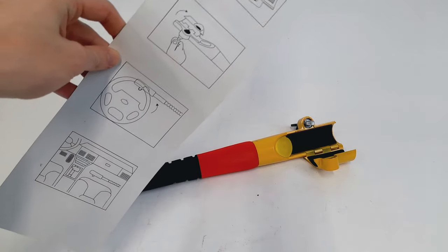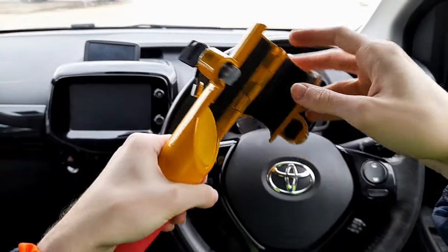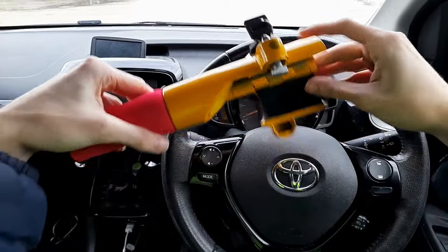An instruction manual is also provided. Putting the lock on is very simple. You just put it over the steering wheel and lock it in place.